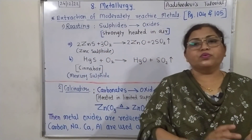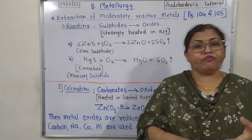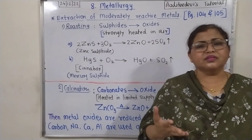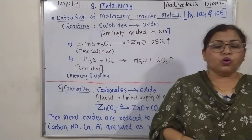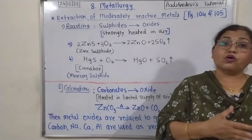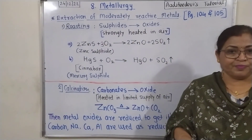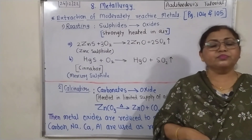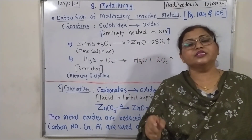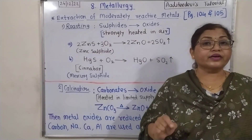On page 105, at the bottom, there is information about extraction of less or least reactive metals. Less reactive metals are also called noble metals, and we mostly get them in pure form — no need for extensive extraction processes, just a simple heating process. After concentration and extraction, comes the refining of metals to remove impurities, and refining is mostly done by electrolysis.